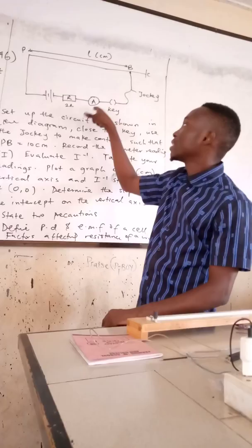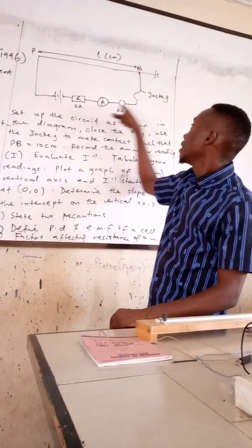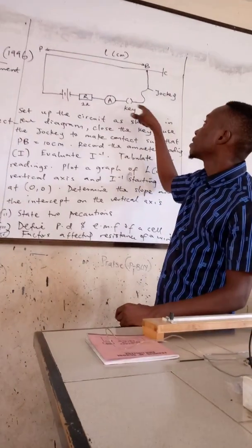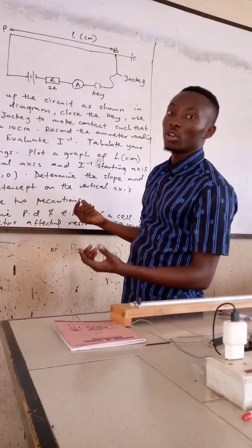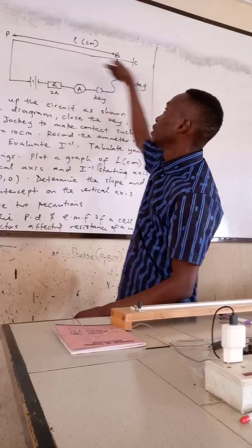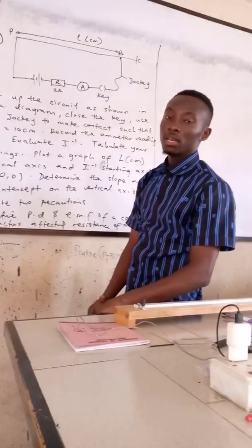And this R is my resistance which is a standard resistor of 2 ohms. And of course I have my current, which is the ammeter, which is connected in series also. Then I also have my key connected in series. Then at the end of my key, a jockey is what's connected. A jockey is used to make contact with the potentiometer.